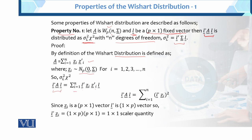So L'AL, as a sum, equals the sum of (L'Zi)². Since Zi is a p×1 vector and L' is a 1×p vector, the product L'Zi has order 1×p times p×1, which equals 1×1 — a scalar quantity. This means it converts the multivariate Wishart into a univariate quantity.